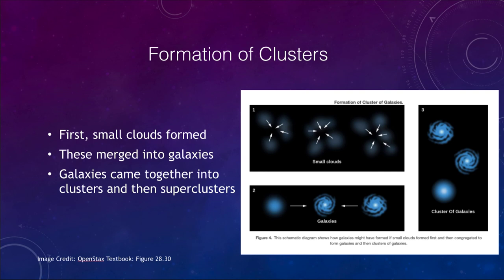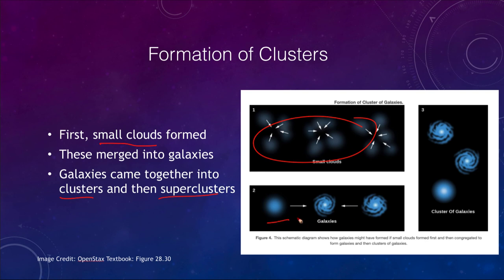When we look at how clusters formed: first we formed small clouds, these merged into galaxies, and then the galaxies came together. Things built up over time - galaxies formed, then those galaxies became clusters of galaxies. Again, it comes down to dark matter starting all of this. Without dark matter we would not have the structures we see in the universe today - there simply is not enough time for ordinary matter alone to have formed those large-scale structures, the filaments and voids.